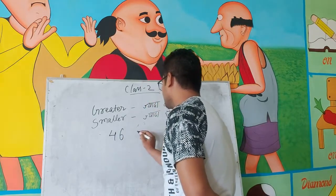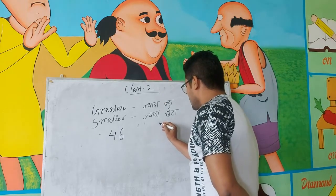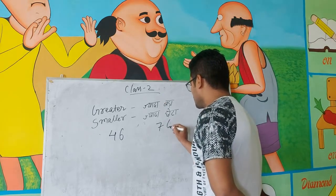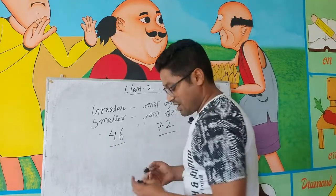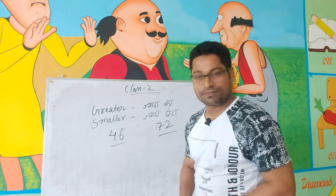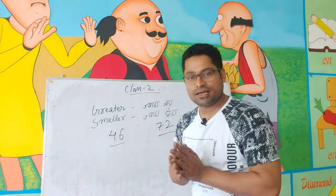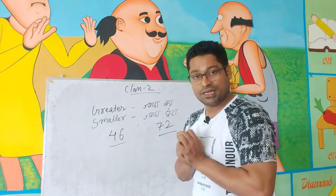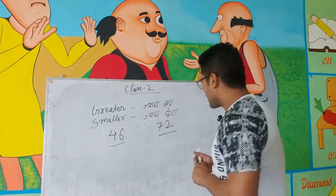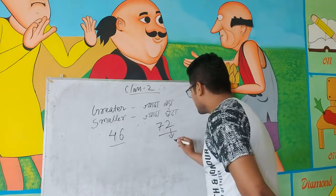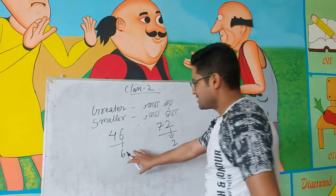अब मान लो कि आपके पास दो number दिए गए — 46 और दूसरा number है let's say 72. अब दोनों में कौन ज्यादा बड़ा है? जब भी तुम comparison करते हो, comparison करने का एक simple तरीका होता है — place value के आधार पर compare करो. अब इसके ones के place पर 2 है, और 46 के ones के place पर 6 है.